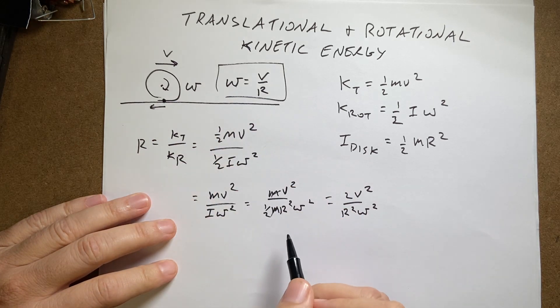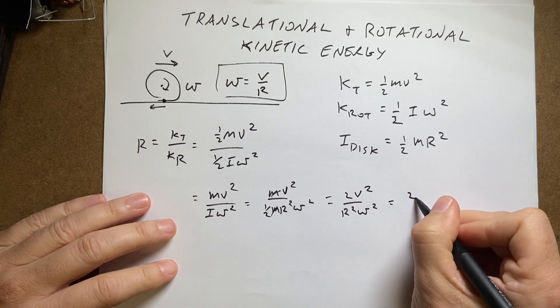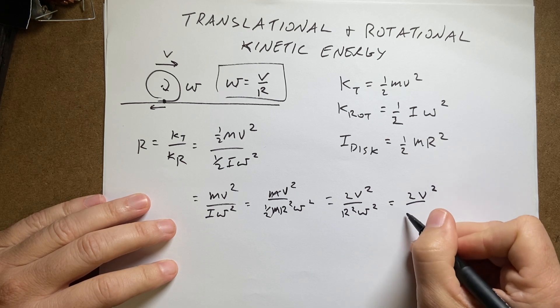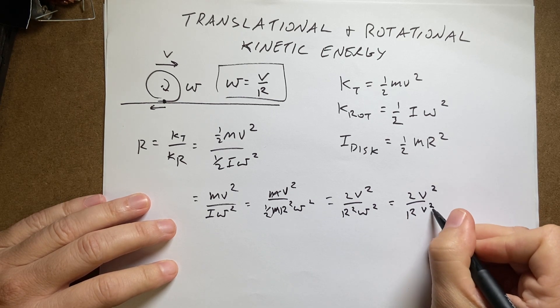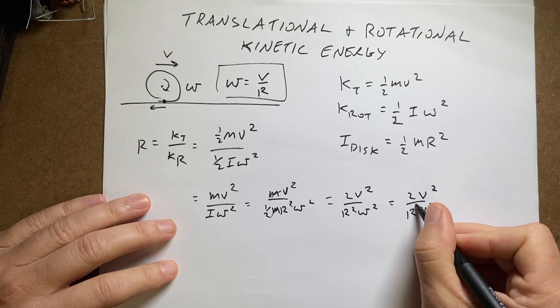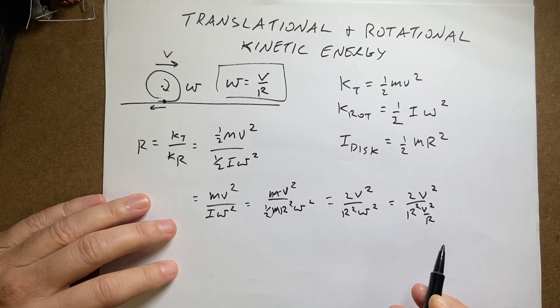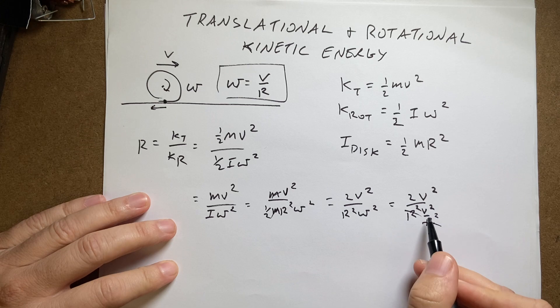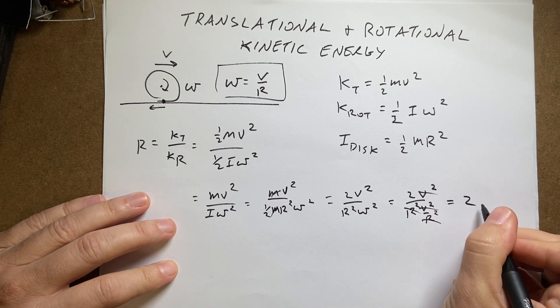So if I substitute this in down here, I get 2v squared over r squared v squared over r squared. And you see what? Squared cancel, cancel, cancel, cancel. 2.